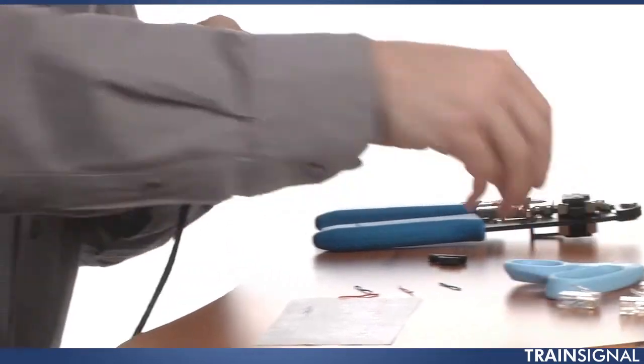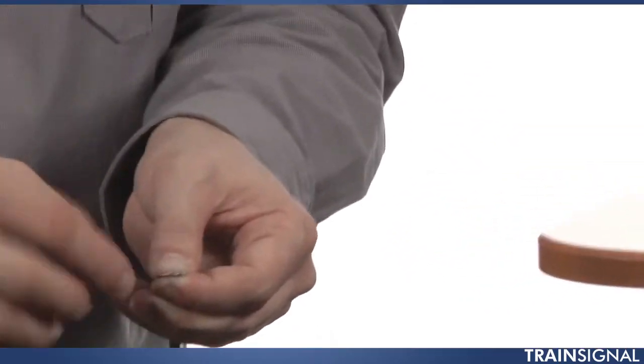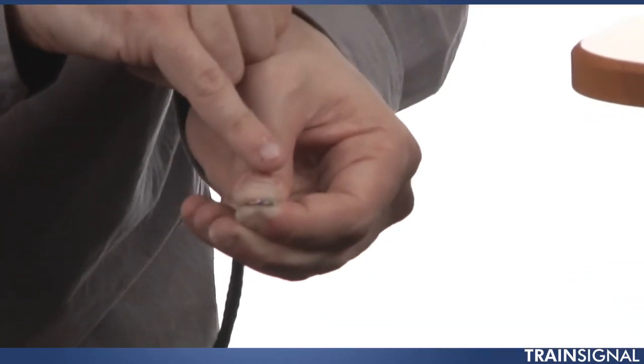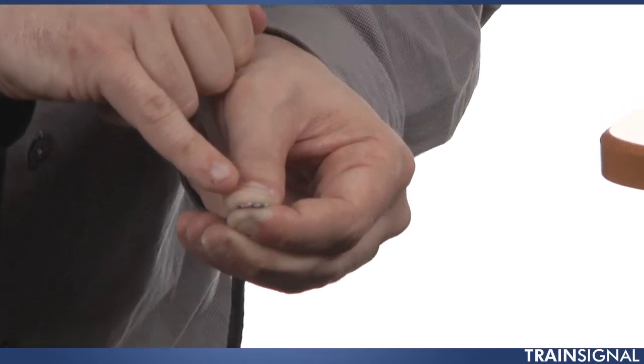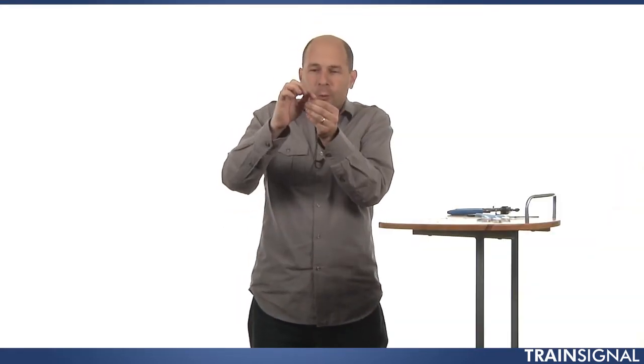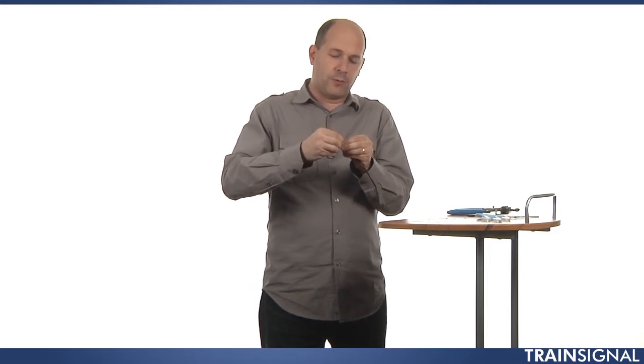All right, I lost a couple of wires there. I want to reconfirm, and this is really hard to show you, but I'm looking at it and I can see it's green white, and then green, orange white, blue, blue and white, orange, brown and white and brown. So right where I cut, I have the colors correct. And now you don't want to lose them.